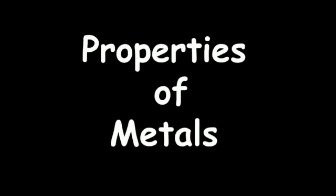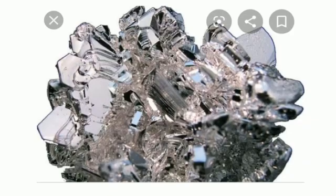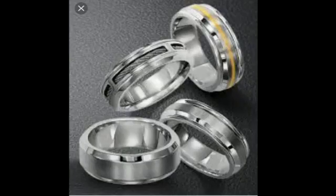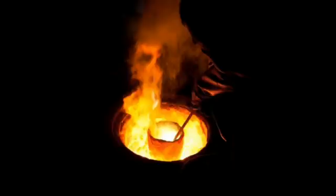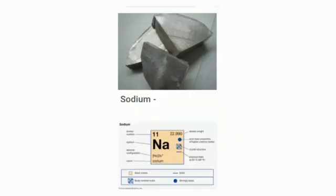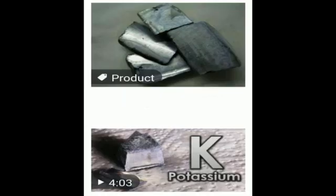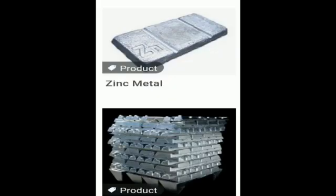First, the properties of metals. Metals are usually hard solids. They have a characteristic shine or luster. Metals are good conductors of heat and electricity — that is why metals are used as utensils or electric wires. They generally have high melting point and boiling point. Some examples of metals are sodium, potassium, iron, zinc, and magnesium.